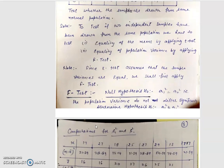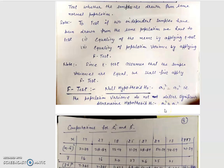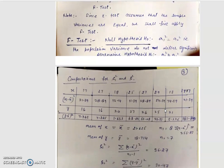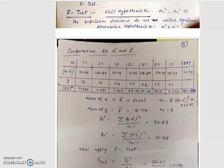Now for the F test, the null hypothesis states that the variances are equal — that is, there is no significant difference between the variances. The alternative hypothesis states that the variances are not equal. Now we calculate small s1² and small s2².